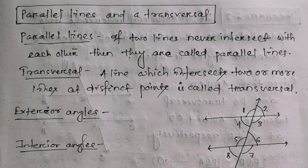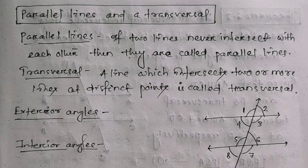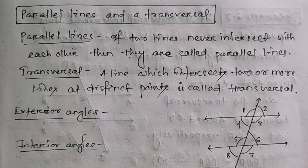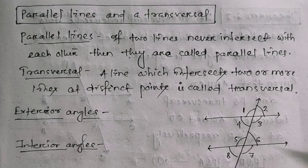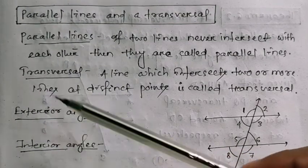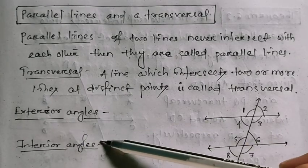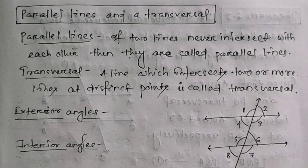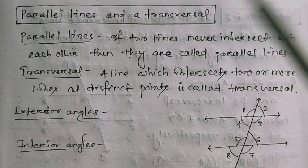Hello students, welcome to my channel Kirti Sikhyasram. Today we are going to discuss the second part of Chapter 6, Class 9 — Lines and Angles. Before we go further, we should know some terms like parallel lines, transversal lines, exterior angle, interior angle, and all those things.